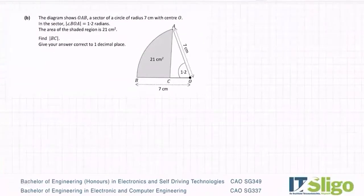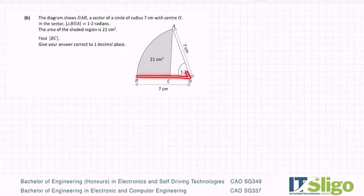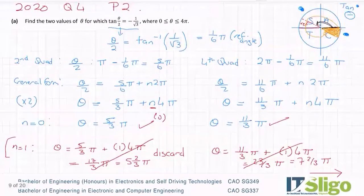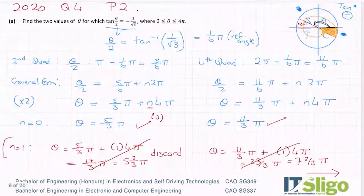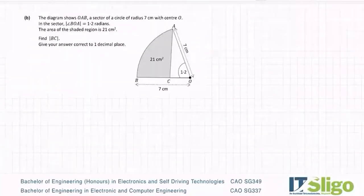Part B. The diagram shows OAB, a sector of a circle of radius seven centimeters with centre O. In this sector, angle BOA equals 1.2 radians. The area of the shaded region is 21. Find the length of BC. Give your answer correct to one decimal place. This is the 2020 paper. You might have to download it from examinations.ie. I'd say take a screenshot for now and download it later.